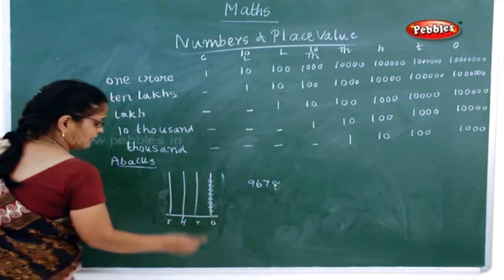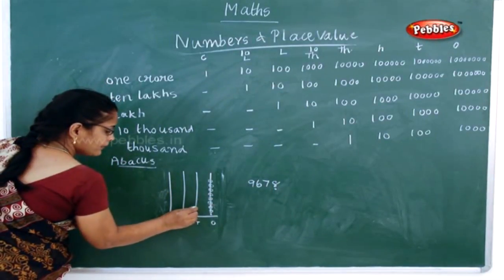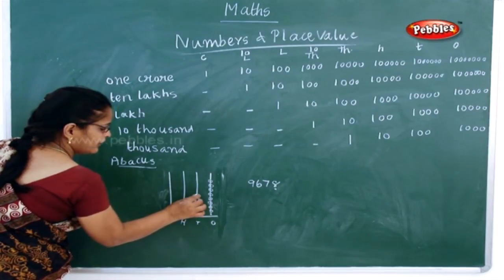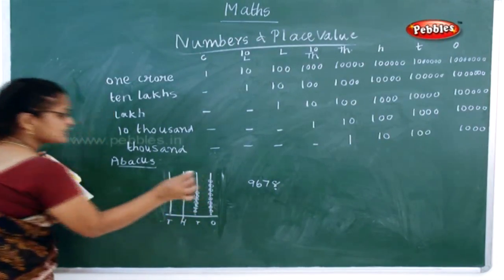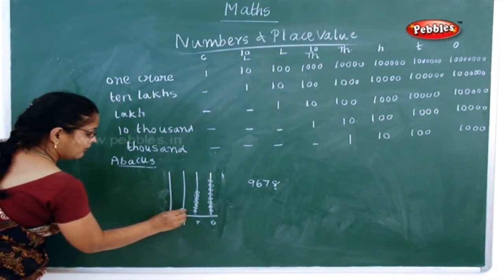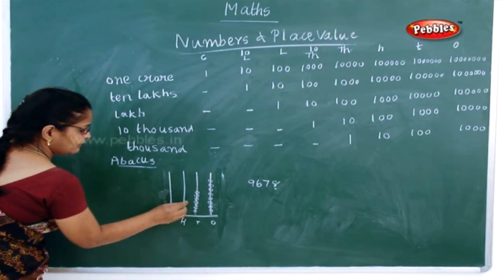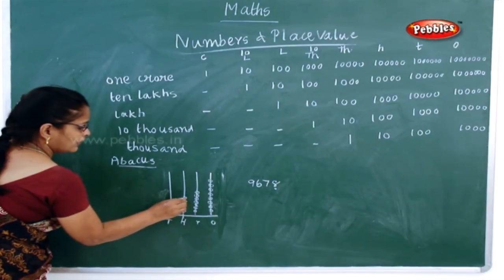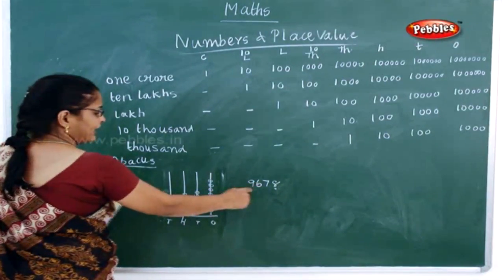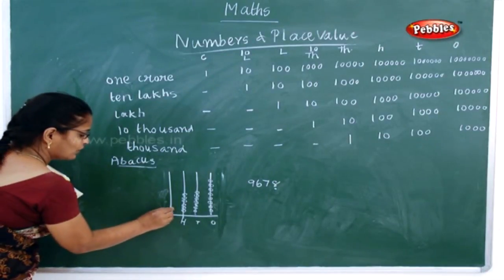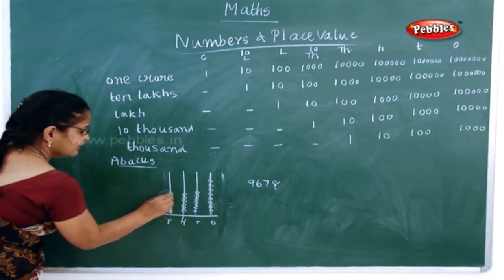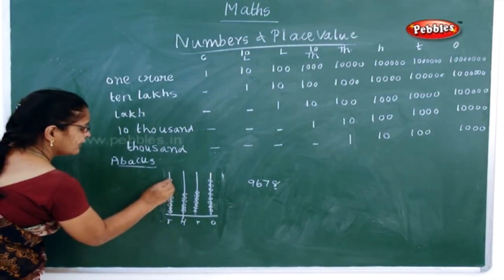Now how many tens are here? Seven. So how many rings will be there? One, two, three, four, five, six and seven rings you will have. Now this one — what is this? Hundreds. How many hundreds will you have? One, two, three, four, five and six. Now six hundreds. Now what is the next one? Nine thousands — so you will have nine rings: one, two, three, four, five, six, seven, eight, nine.